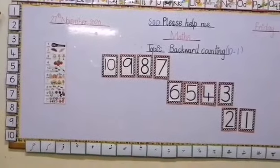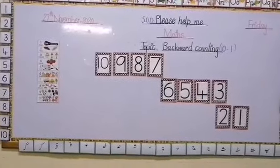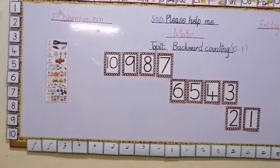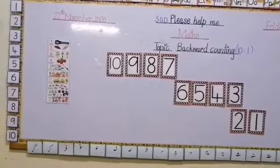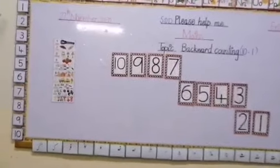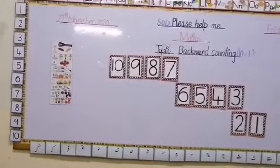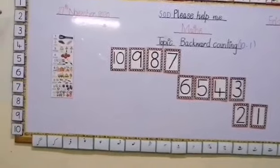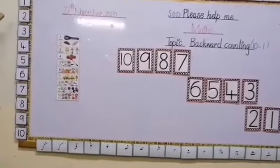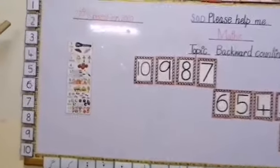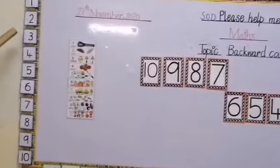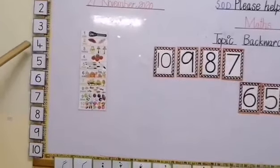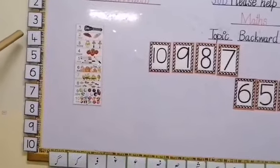Which number is this? Number 1. Very good. What comes after number 1? Number 2. Well done. And what comes after number 2? Number 3. Very good. What comes after 3? Number 4. Yes, you're right.